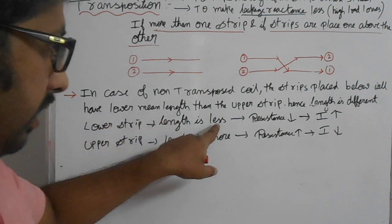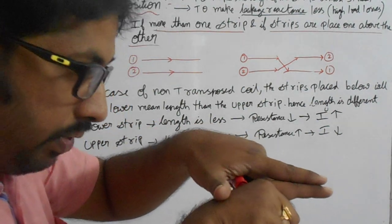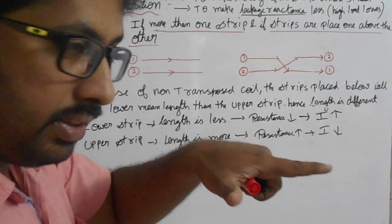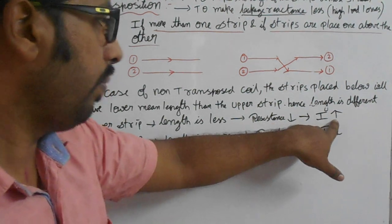For the lower strip, length is less, mean length is less, and the resistance is less, so current is more.